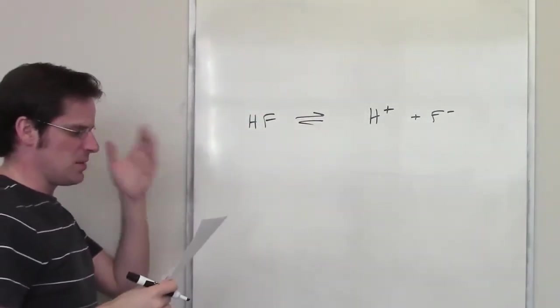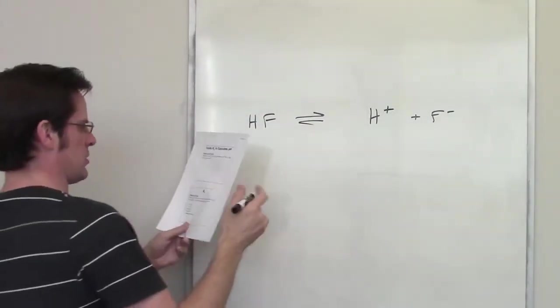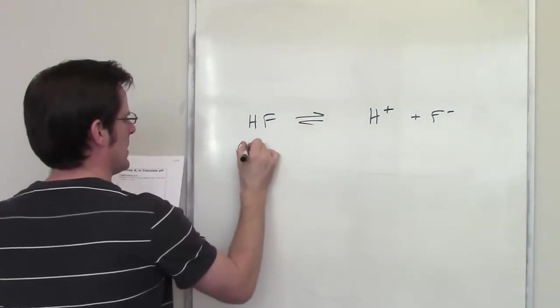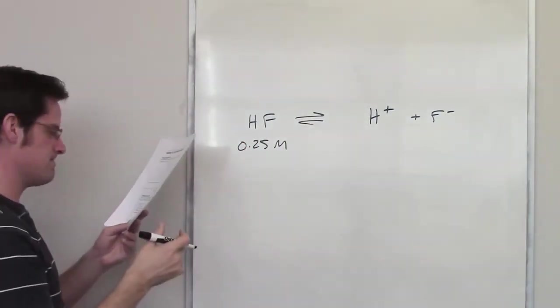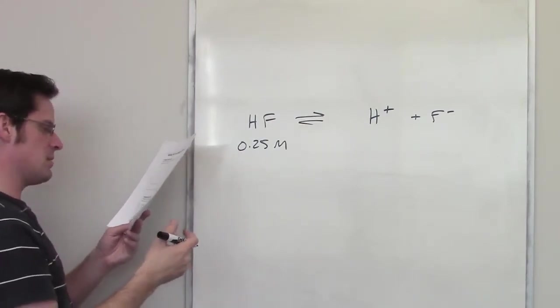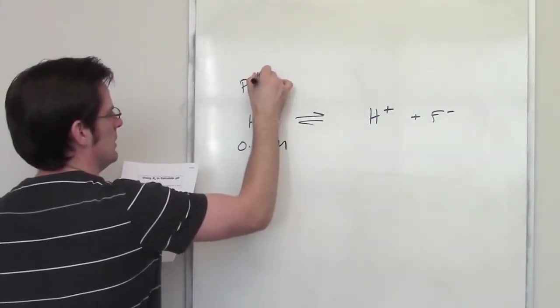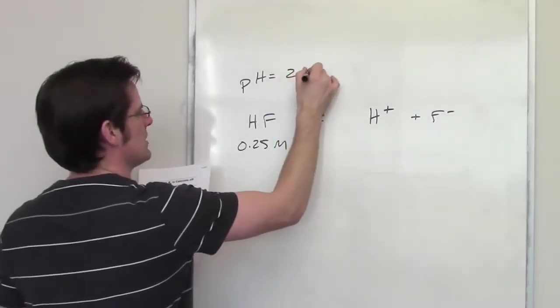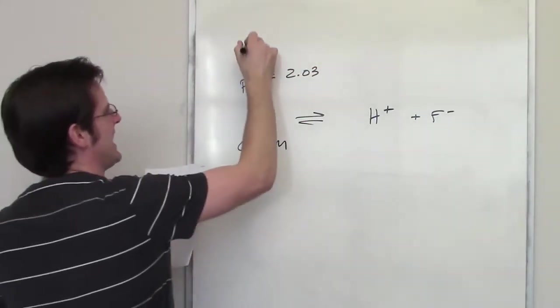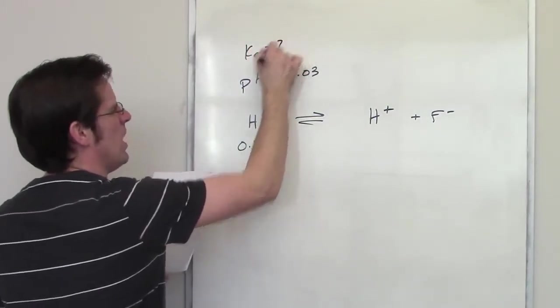It then tells me that the pH... it gives me the concentration of H+. I've got 0.25 molar HF. That's an initial concentration. And it tells me that the pH of this solution, once it reaches equilibrium, is equal to 2.03. It then asks me what Ka is. Ka equals what?